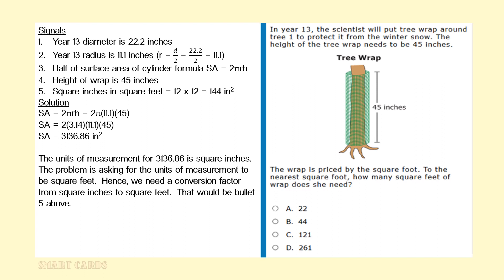The units of measurement is squared inches. However, the problem is asking for the units of measurement to be in square feet. So we need a conversion factor to convert square inches to square feet. That's where bullet number 5 above comes into play. So we're going to take 3136.86 square inches and divide that by 144 square inches, and that's going to give us approximately 22 square feet, which is answer option A.